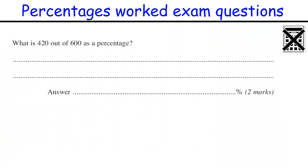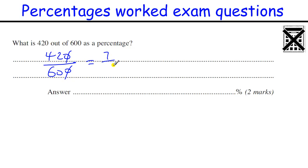A few non-calculator questions to finish. Work that out as a percentage — nice straightforward question. Do a little non-calculator work: knock off some zeros, figure out that 6 goes into both, giving 7 and 10. That's 70 over 100, which is 70% for two marks.